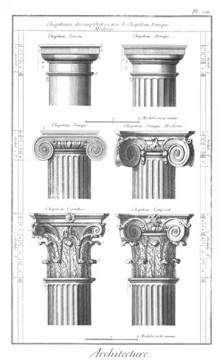Scroll: ornamental element featuring a sequence of spiraled, circled, or heart-shaped motifs. There are, among others, flower scrolls, foliated scrolls, plant scrolls, and vine scrolls.